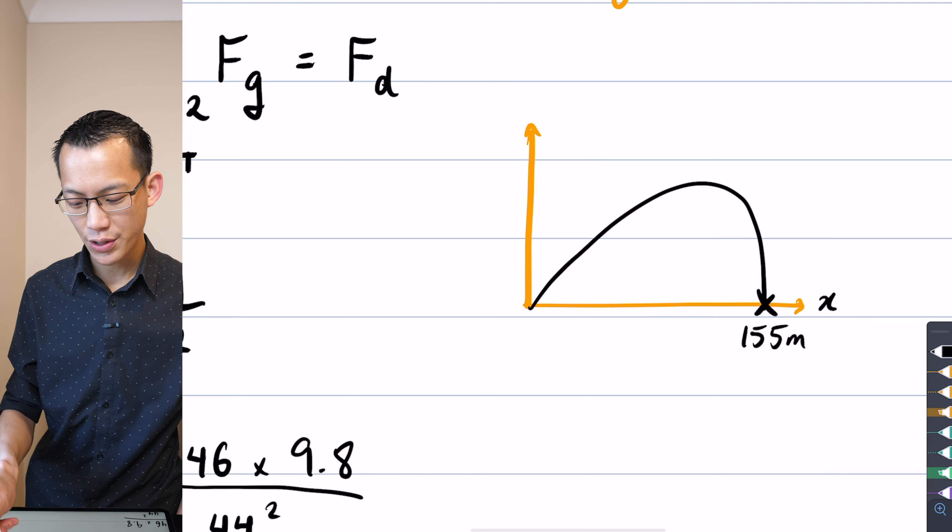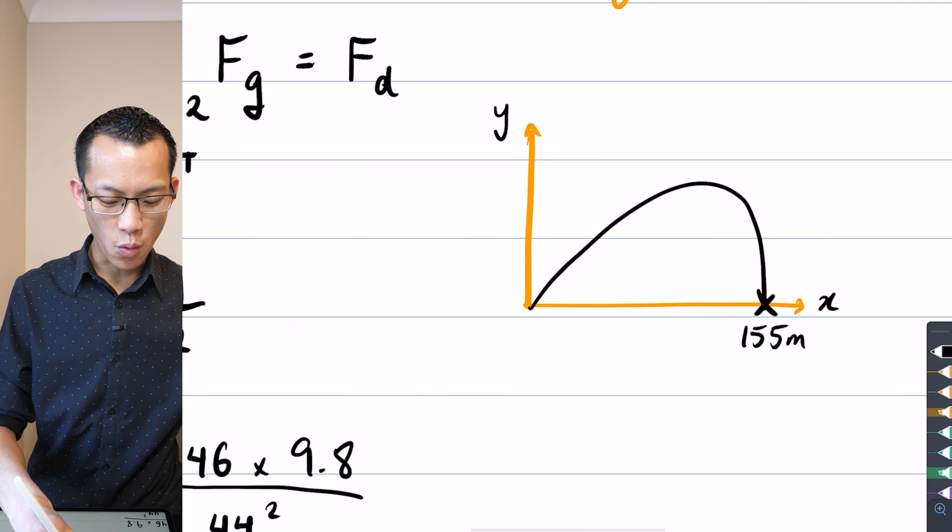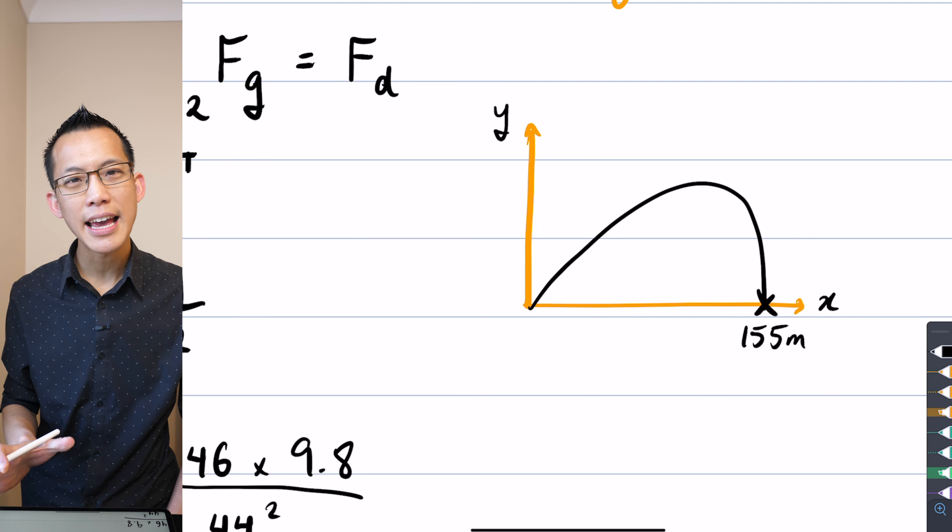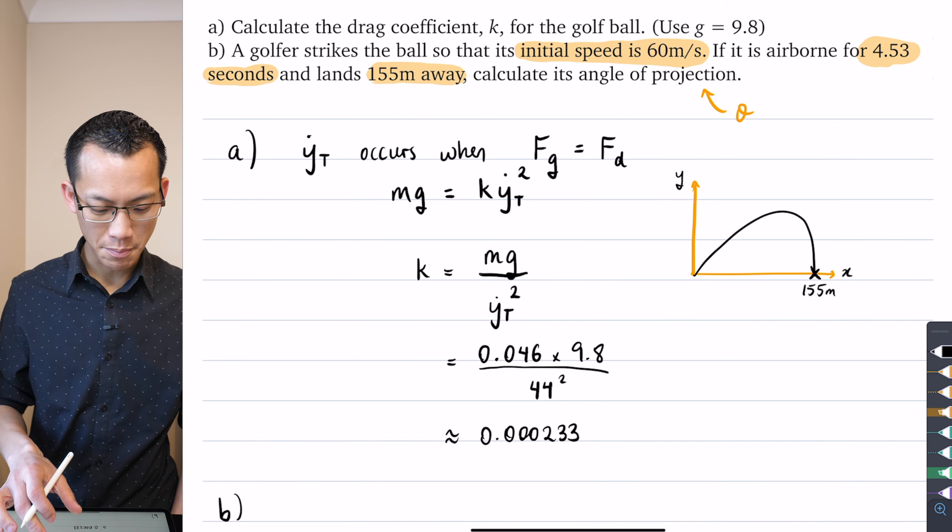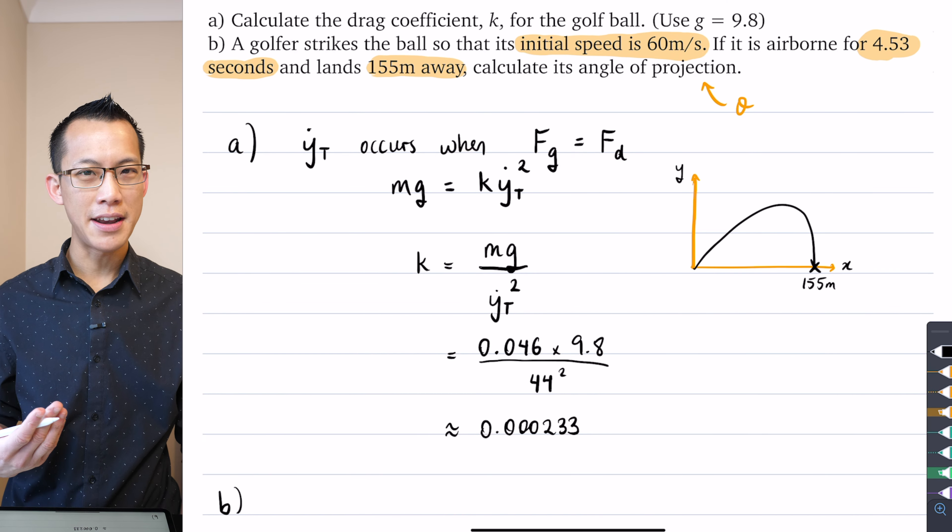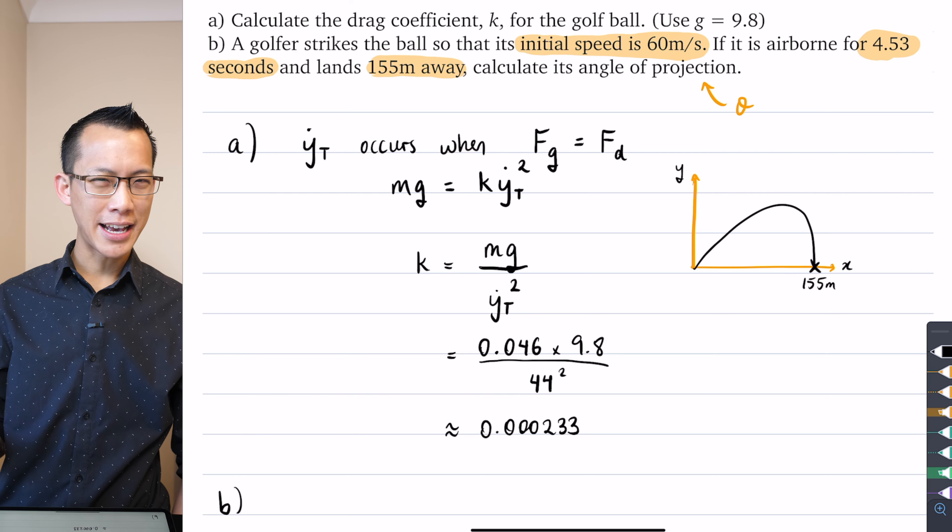And then it lands somewhere. When the question says it lands 155 meters away, where is that on this diagram? The answer is it's here, this landing position. So this 155 meters away is actually a horizontal, an X piece of information, not a Y piece of information. In fact, we hardly have to answer anything about Y.